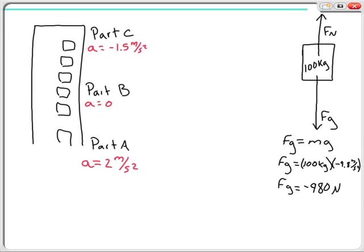For Part C, the acceleration is negative 1.5 meters per second squared. Remember, this is a negative acceleration but I have a positive velocity — my velocity vector was up, but my acceleration vector is down. That's a slowing. Going back to Part A, the velocity was starting to go up and my acceleration vector was also up, so that was an increase in speed. In the middle I had constant velocity because acceleration was zero.